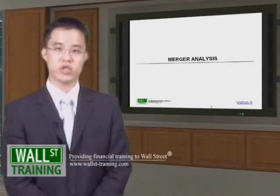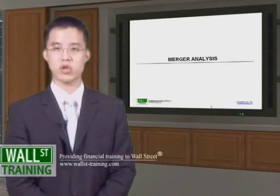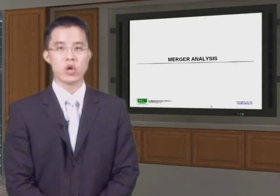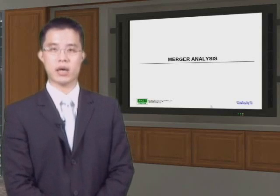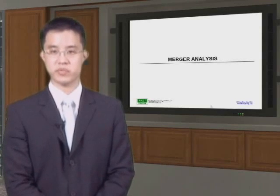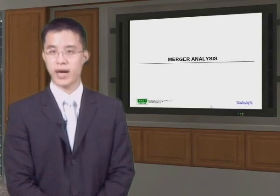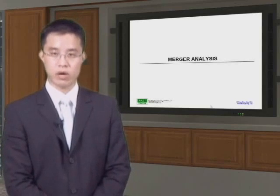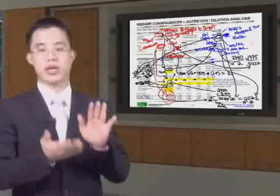Hello and welcome back to Wall Street Training's Mergers and Acquisitions Deal Structuring course. In this third and final section, we will look at some basic number crunching, specifically our accretion dilution analysis. In our Merger Modeling module to follow this, you will actually build it in Excel, as well as combining two income statements and an ability to pay analysis. Let's see how these numbers are calculated.